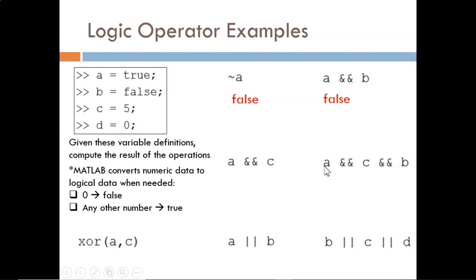In the next examples, we see MATLAB's automatic data type conversion feature. We are passing in C, a numeric value, into a logic operation. MATLAB converts this for us into a logical TRUE because 5 is a non-zero number. Now, A AND C reads TRUE AND TRUE, so the result is TRUE.